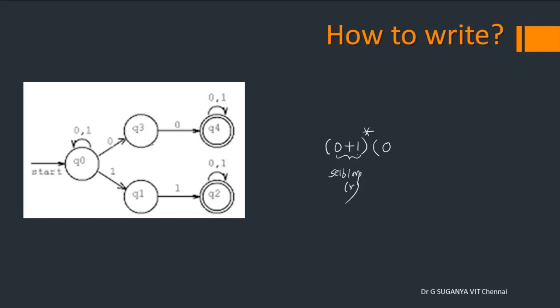Okay, so I have reached Q3. Then from Q3, we can reach Q4 by reading another 0. Right? When you reach Q4,